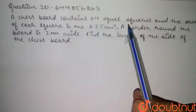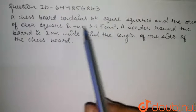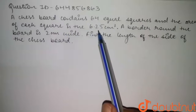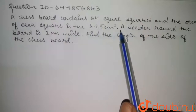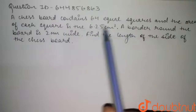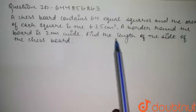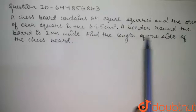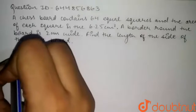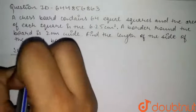In the given question, a chess board contains 64 equal squares and the area of each square is 6.25 centimeter square. A border around the board is 2 centimeters wide. Find the length of the side of the chess board.